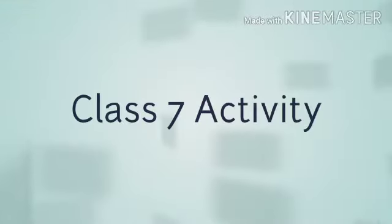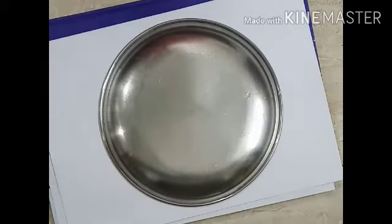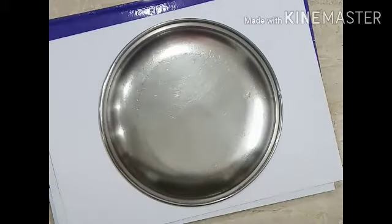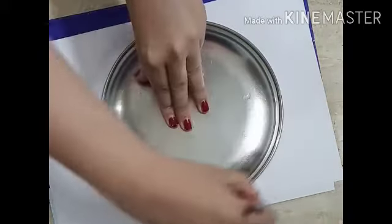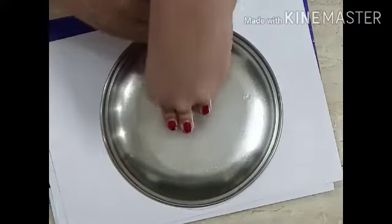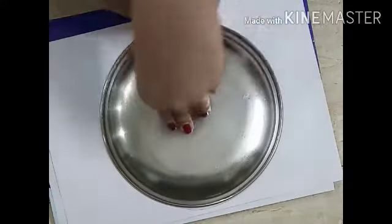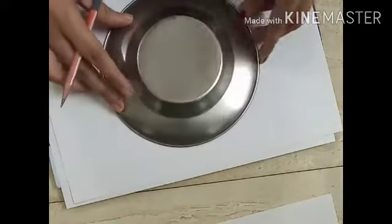Hello students, today we are going to do an activity based on chapter number 13: Exponents. For this you will be needing three sheets. To draw a circle I've used a plate because I did not have a compass. So even if you don't have the required stationery, you can take some substitutes. In place of colored sheets I've used plain paper. If you have colored sheets or ruled sheets, you can use those also.